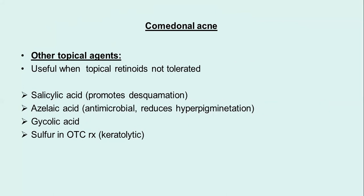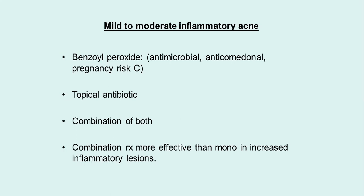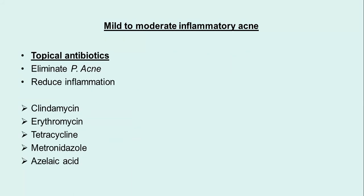Topical agents: salicylic acid is very good because it reduces acne as well as hyperpigmentation. Then glycolic acid for peels and sulfur in over-the-counter treatment as a keratolytic agent. Mild to moderate acne requires benzoyl peroxide, topical antibiotics, and combinations for inflammatory reactions. Mild to moderate inflammatory acne requires topical clindamycin to eliminate Propionibacterium acnes and reduce inflammation — along with erythromycin, tetracycline, metronidazole, and azelaic acid.